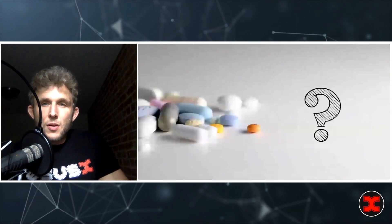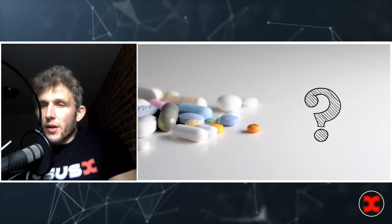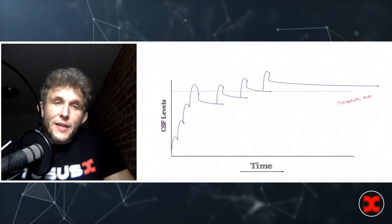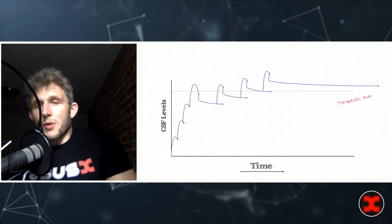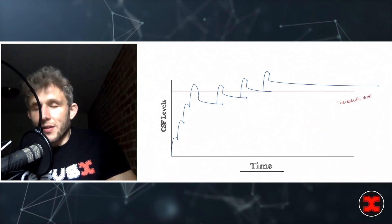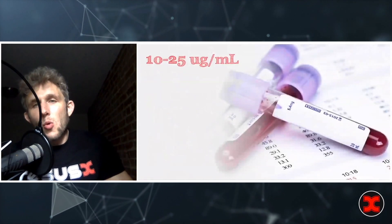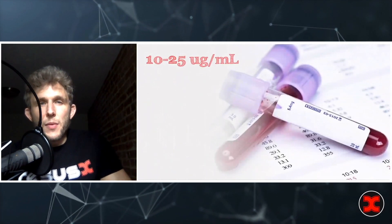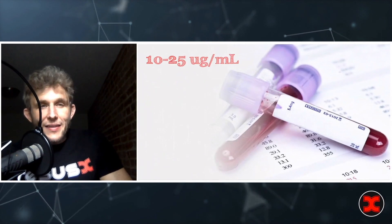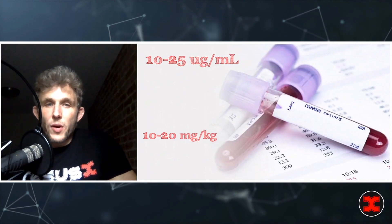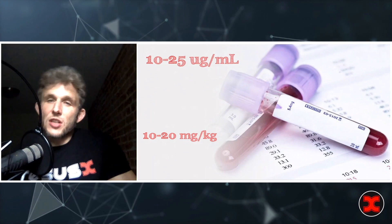What makes phenobarbital special? First, it's very predictable — in two ways. The blood level that treats alcohol withdrawal is predictable: getting a patient between 10 and 25 micrograms per milliliter of serum phenobarbital usually controls withdrawal. The dose required to achieve those levels is also predictable: giving 10 to 20 mg/kg typically produces the appropriate blood level. So it's a fairly easy medication to give with fairly predictable results — often one dose gets the patient under control, using the long half-life as a built-in taper.